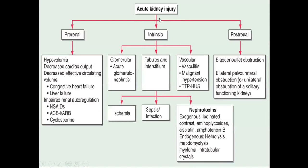Pre-renal acute kidney injury has several causes including hypovolemia, decreased cardiac output, decreased effective circulating volume as seen in congestive heart failure and liver failure, and dysregulation of the kidney's autoregulatory processes.